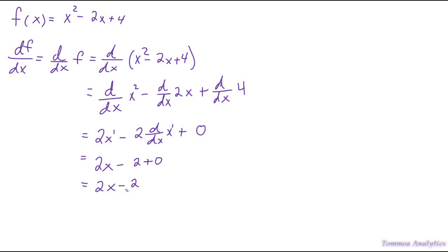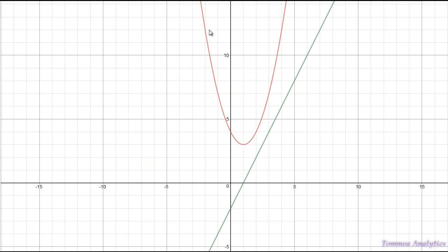So 2x - 2 is the derivative of the function x² - 2x + 4. We've effectively created a new function, 2x - 2, from the old function. What the function 2x - 2 does is it allows us to plug in a number for x, and the value we get back is the slope of the tangent line to the function x² - 2x + 4. Over here I've graphed the original function, which is just the parabola, and I've also graphed the new function 2x - 2, which is the green line.